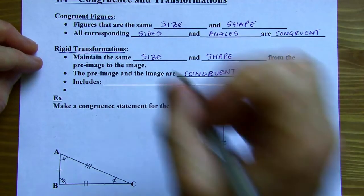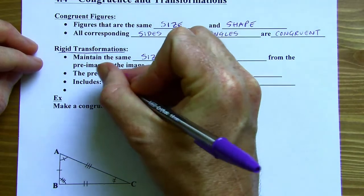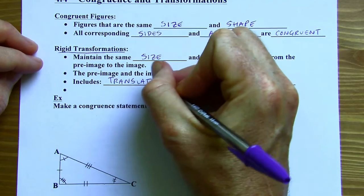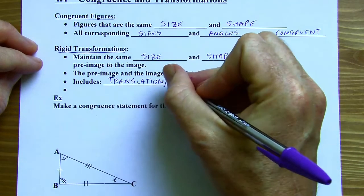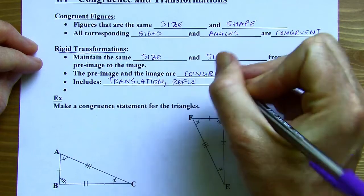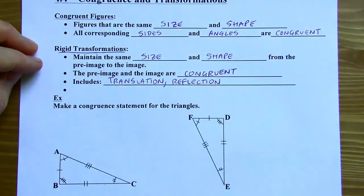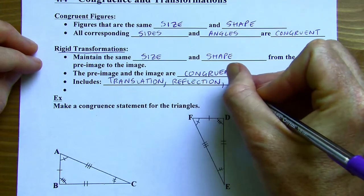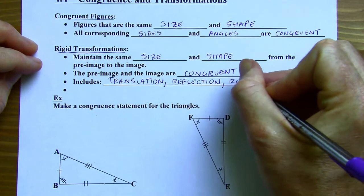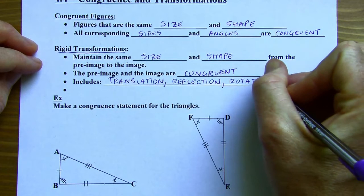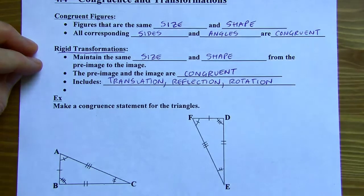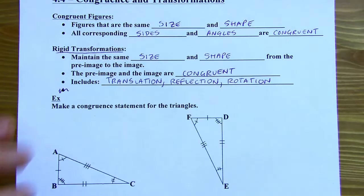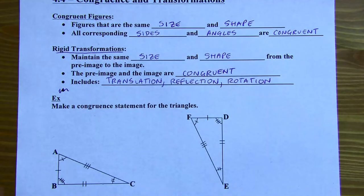Examples of rigid transformations include everything we've done so far: translations, where you're just sliding the figure around, won't change the size or shape. Reflecting it over a line also won't change size or shape, and neither will a rotation. So all of the transformations we've done so far are considered rigid transformations.